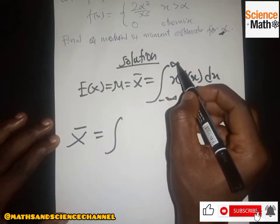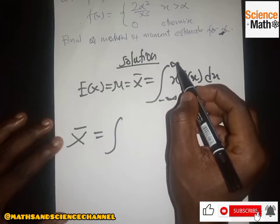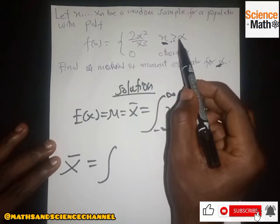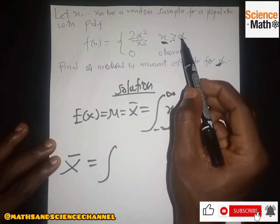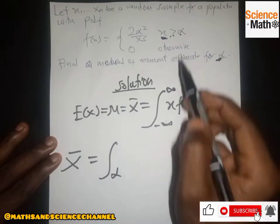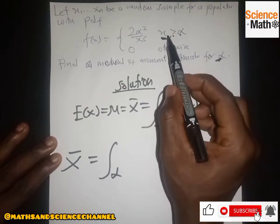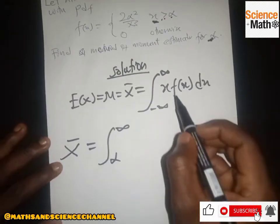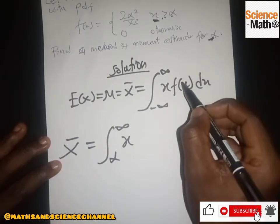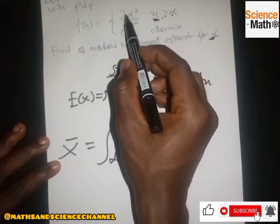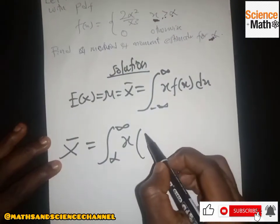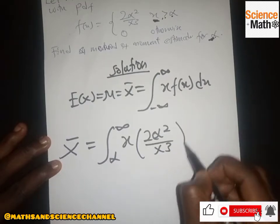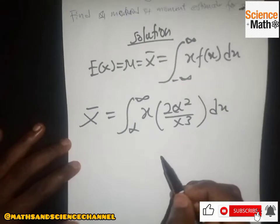In this case, x-bar equals the integral with the lower limit α — since the condition is x greater than α — and upper limit positive infinity, of x multiplied by f(x). Here f(x) is the piecewise function we are given: 2α² divided by x³.